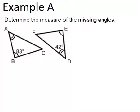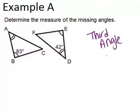In this video, we will look at a few examples that will let us practice using the third angle theorem. What the third angle theorem says is if we know that two pairs of angles of two triangles are congruent, then the third pair of angles must be congruent as well.